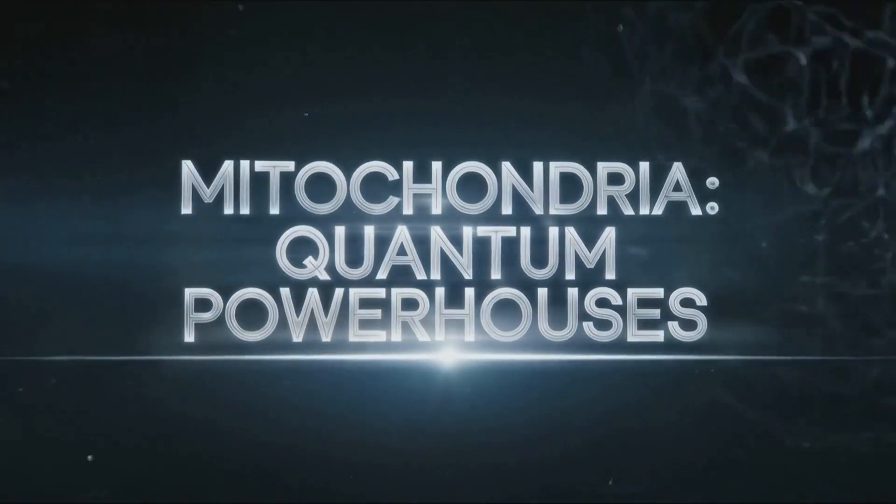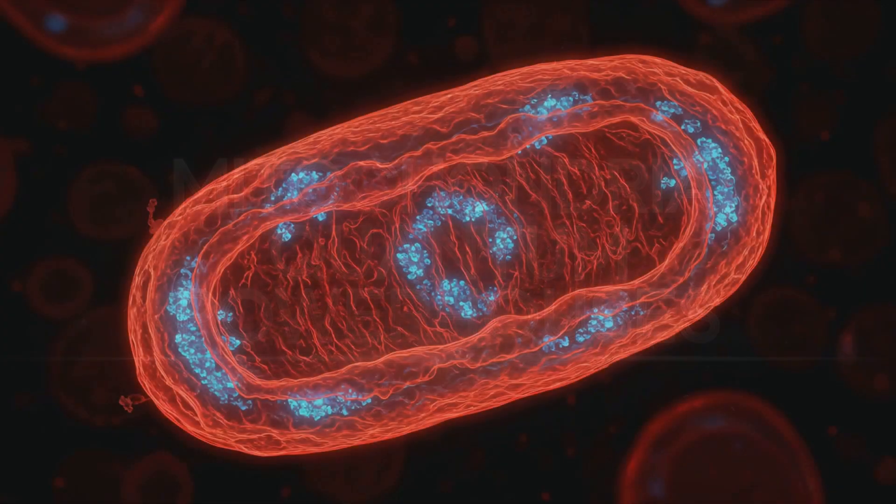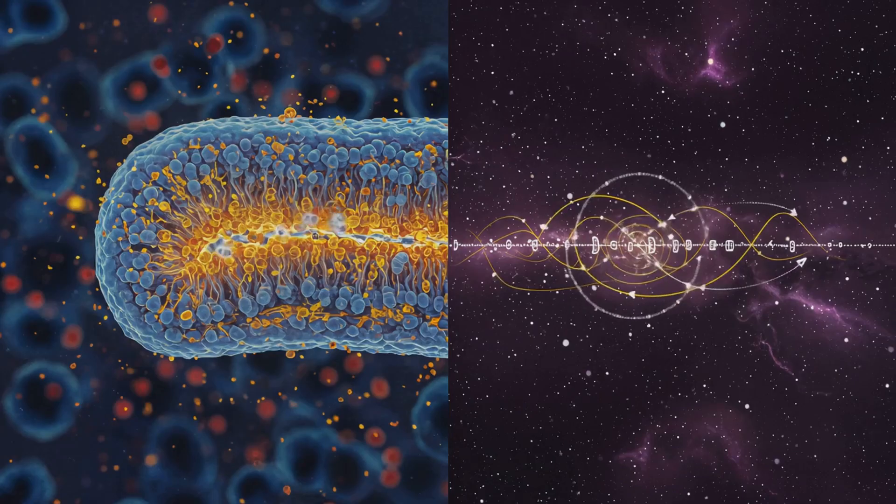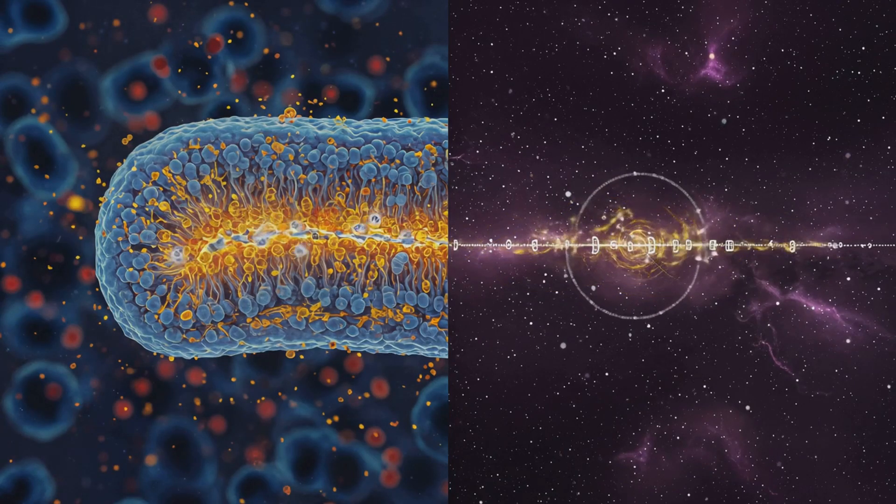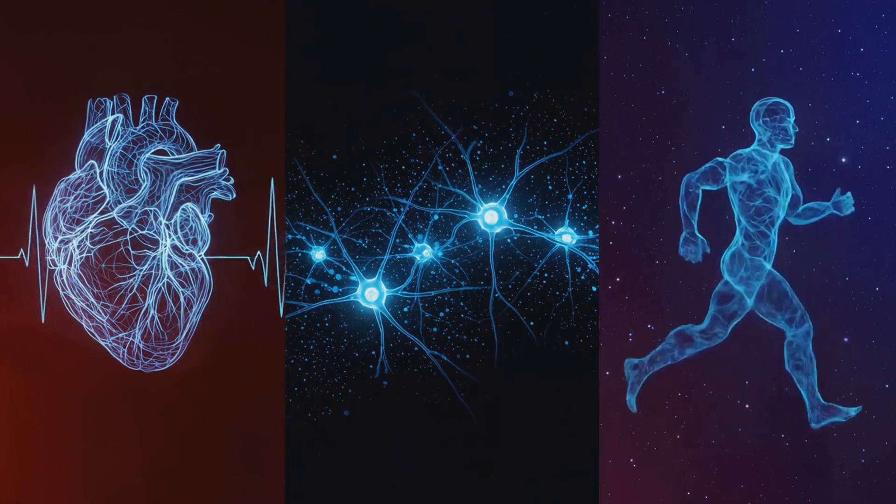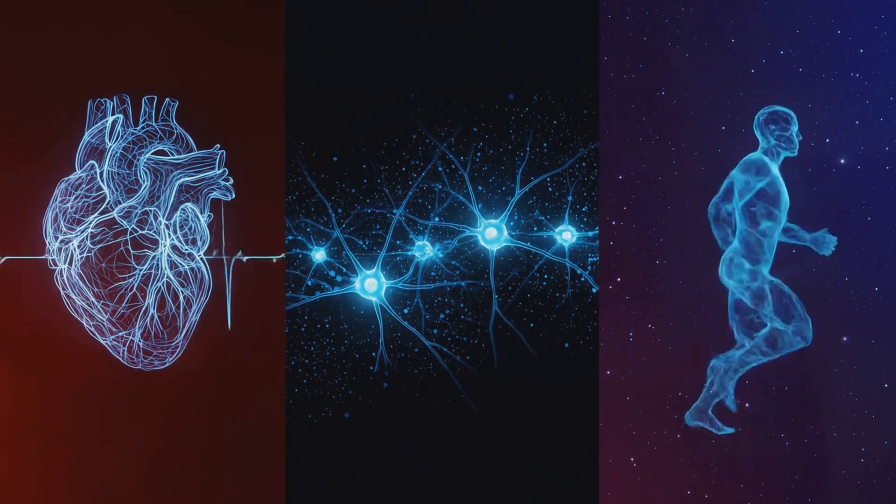Mitochondria are quantum turbines. The proton gradient across their membranes is not just chemistry, it is spin difference, a phase alignment of QSVs. This spin-induced potential transforms into energy, and this energy powers your heartbeats, your thoughts, your movements.